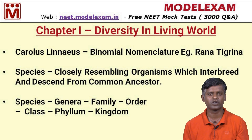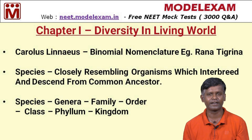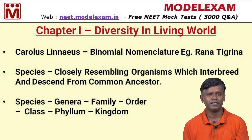For example, humans are termed Homo sapiens — 'Homo' is the genus and 'sapiens' is the species. In binomial nomenclature, the genus name is always written with a capital first letter, while the species name is always written in lowercase. Both names must be italicized. This is the standard pattern for naming an organism.